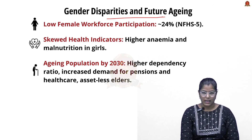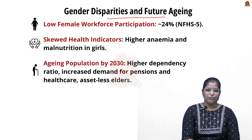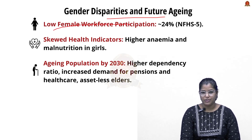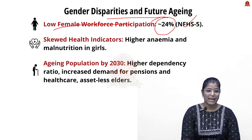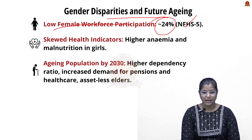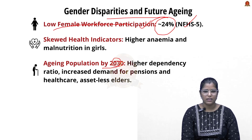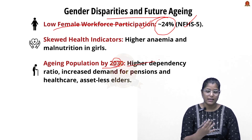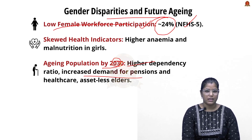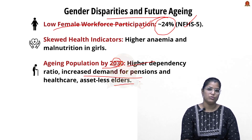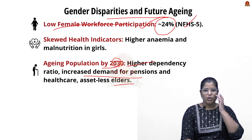India also faces gender disparities and future aging challenges. Female workforce participation is very low — approximately 24% as per NFHS-5 — with skewed health indicators including higher anemia and malnutrition among girls. Looking ahead to 2030, there will be a higher dependency ratio, increased demand for pensions and healthcare, and a growing population of asset-less elderly.